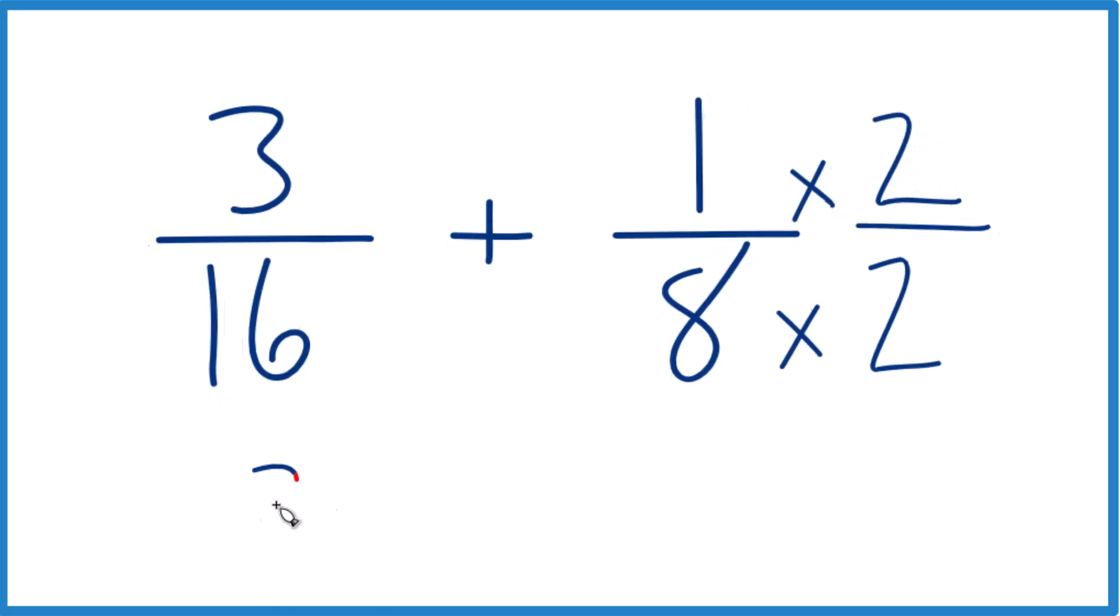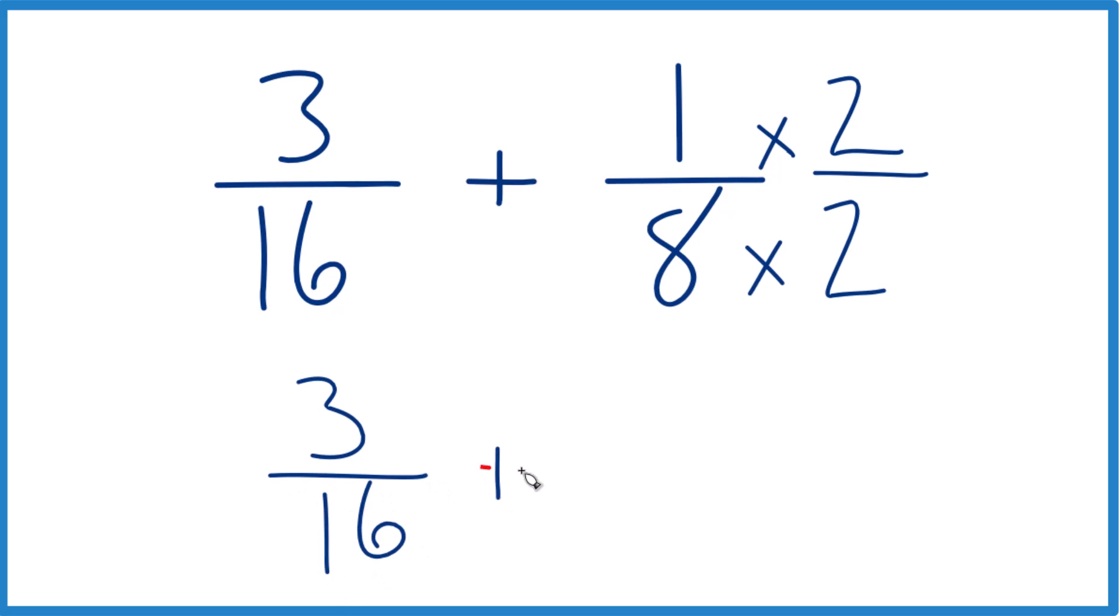But now I have my 3/16 here, we'll keep that the same, plus I have 1 times 2 is 2 and 8 times 2, that's 16. So now I have the same denominators.